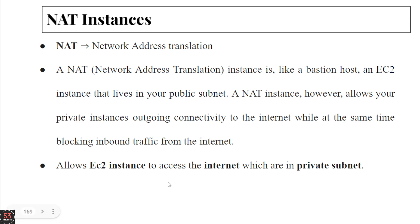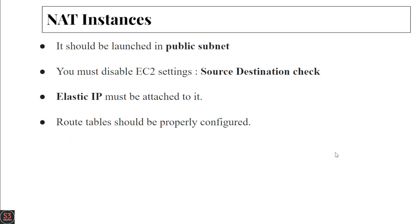NAT instances allow EC2 instances in your private subnet to access the internet. NAT instances should be launched into the public subnet. You must disable the EC2 setting called source destination check. You also have to attach an Elastic IP to your NAT instance, and your route tables should be properly configured.